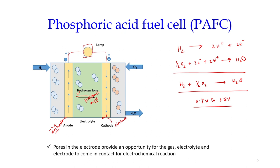One important feature is that the electrodes maintain porosity. The pores in the electrode provide an opportunity for the gas, the electrolyte, and the electrode to come into contact for the electrochemical reaction. The efficiency also depends on the kind of catalyst used.